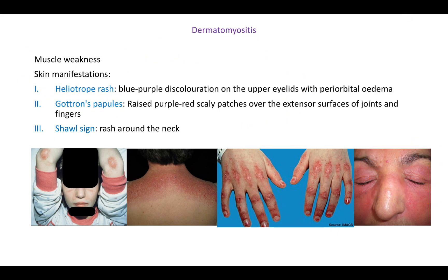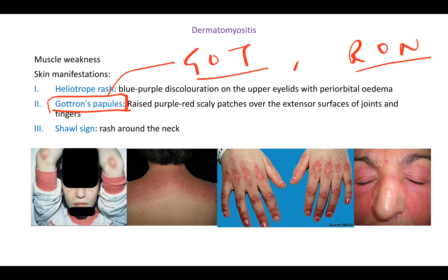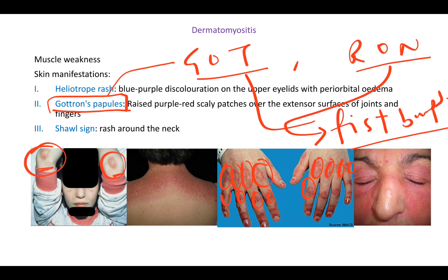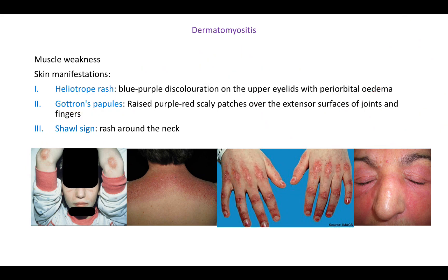Gottron's papules — if you think of 'Got' as in Game of Thrones or 'Ron' from Harry Potter, there's violence involved, like punching, leading to bruised-looking bumps on the extensors. These are red, scaly rashes over the extensor surfaces — the dorsal surface of the hands and over the elbows — and they are called Gottron's papules.